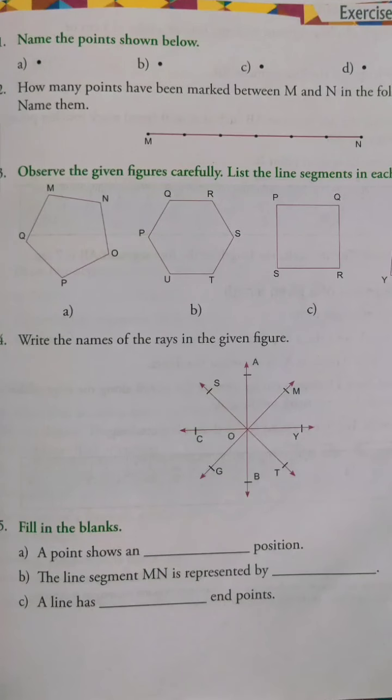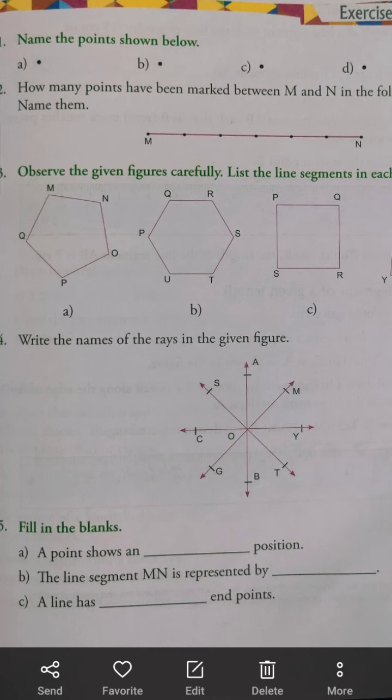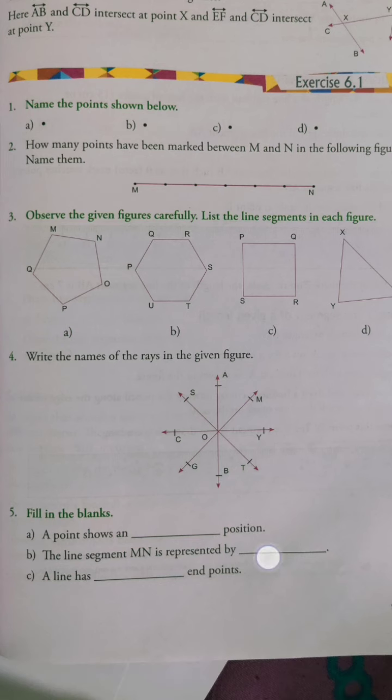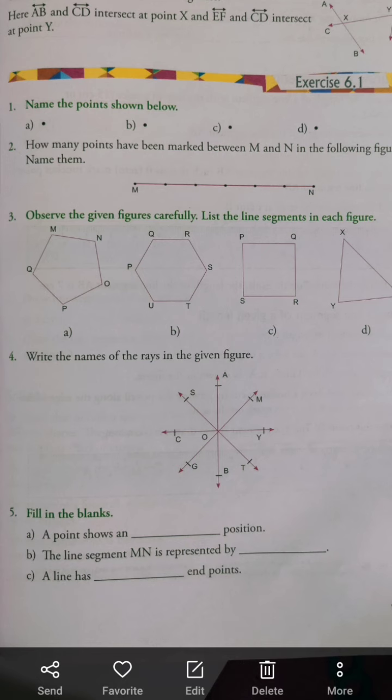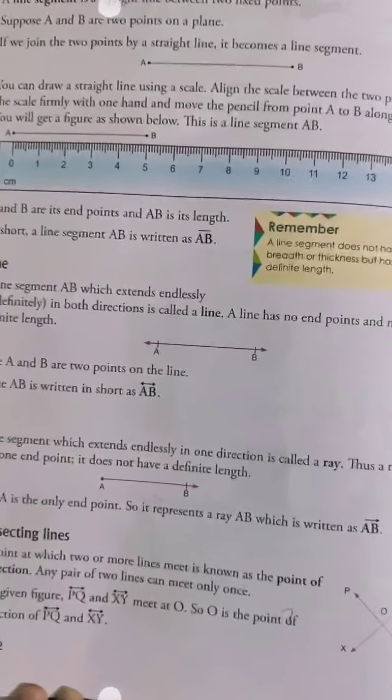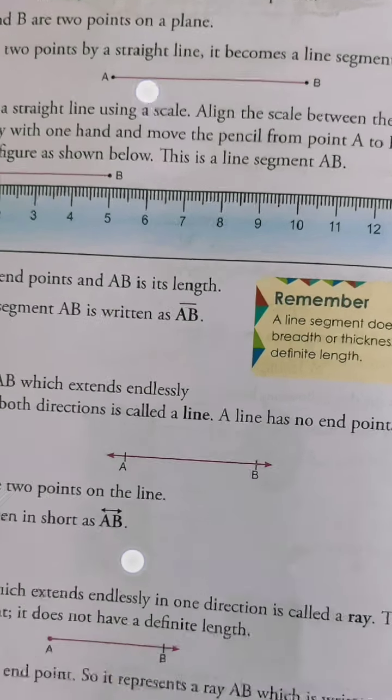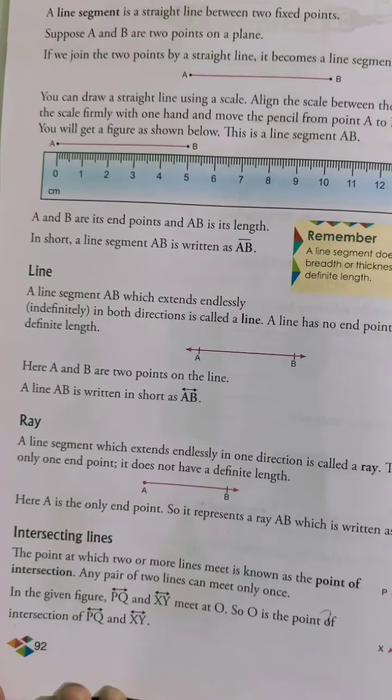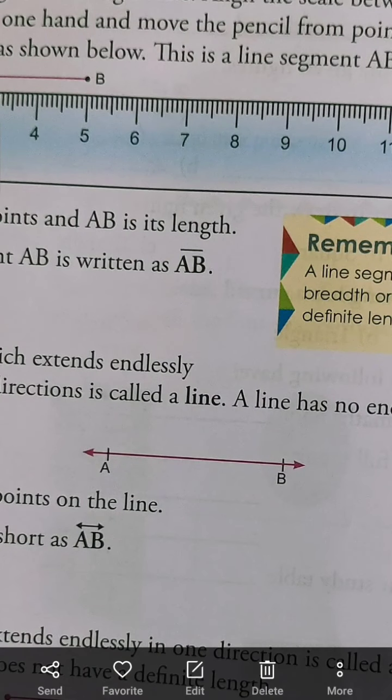Coming to part B. The line segment MN is represented by blank. Because it's a line segment, a line segment has both end points, so it has a specific length. With two end points, how do we represent a line segment? MN, or on top of it we draw a line like this. We have a blank here, so in that shape we will draw a line on top of MN, just like this. You can see here, on top there is a line. Similarly, a line segment, so we will draw this type of line on top of MN. That will be our line segment.